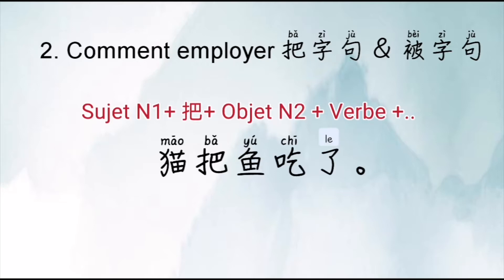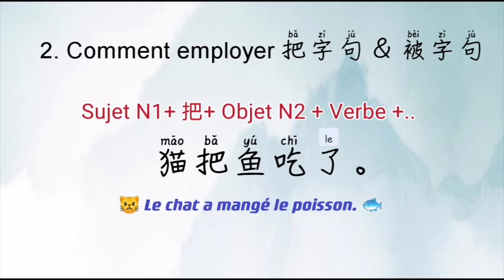Exemple : MAO BA YU CHI LE. Le sujet, c'est MAO qui donne l'action CHI. L'objet, c'est YU qui reçoit l'action. Donc sujet + BA + objet + verbe + LE — LE est une particule pour dire qu'une action est finie. Donc cette phrase veut dire : le chat a mangé le poisson.